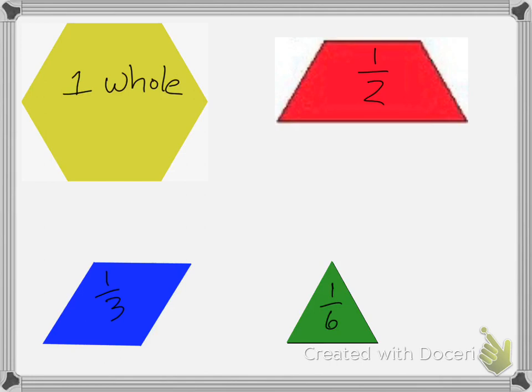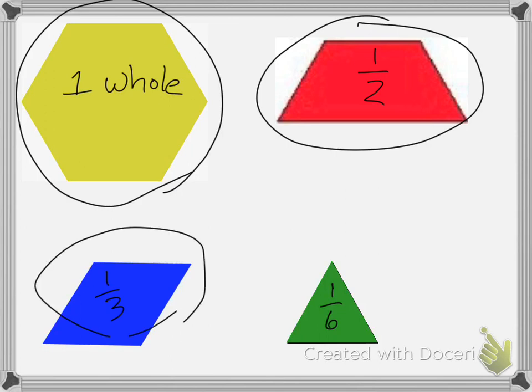So a yellow is one whole, a red is a half, the blue is a third, and the green is 1/6.